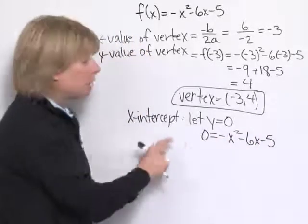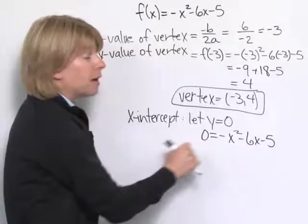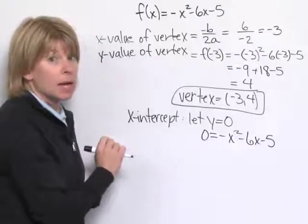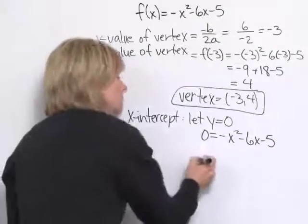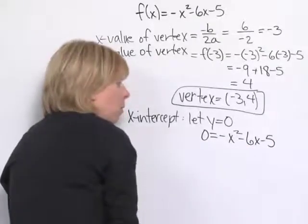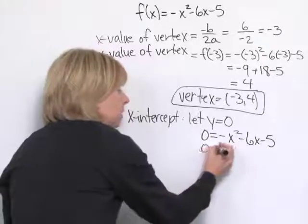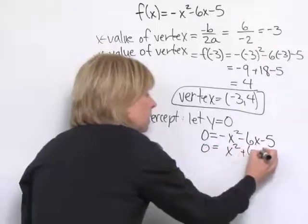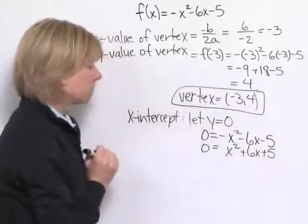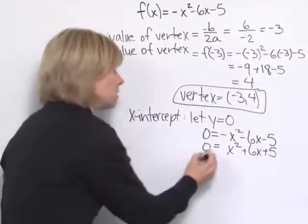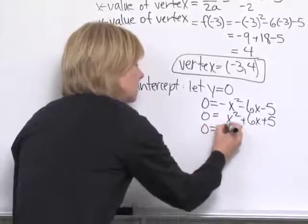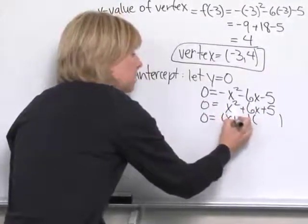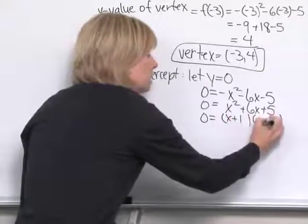Now I've got a quadratic equation to solve. First, I'm going to divide each side by -1, so I have all positives on my right, and I'll be able to factor that more easily. Dividing by -1, I still have 0 here, and all my signs on the right change to positive. Now if I factor this, it factors to (x + 1)(x + 5).